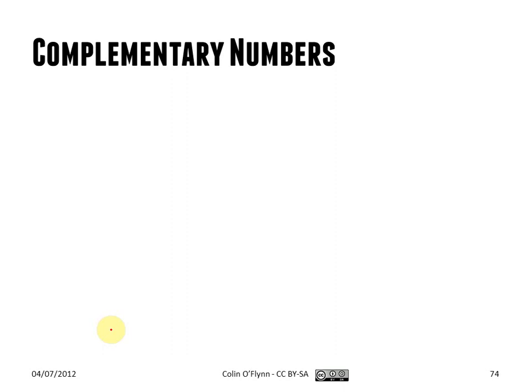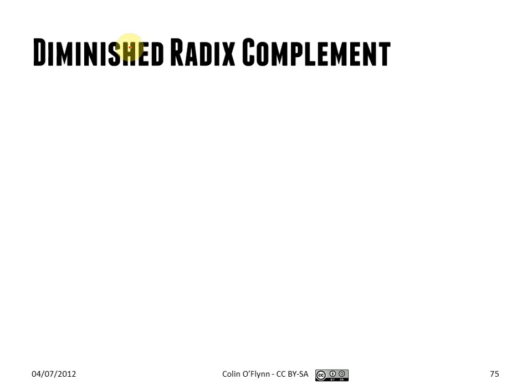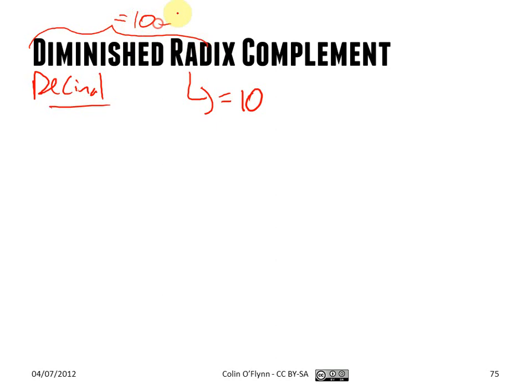To really see how this works, we have to talk about complementary numbers — it's a mathematical term, not about being nice. We'll talk about the diminished radix complement first, in decimal. For decimal, the radix is equal to 10 — base 10. So the diminished radix is just 10 minus 1, which is the radix minus 1. So for decimal, the diminished radix complement is 9.